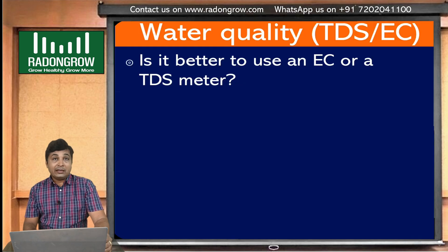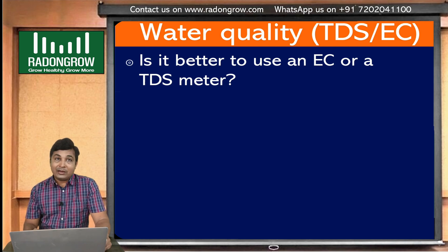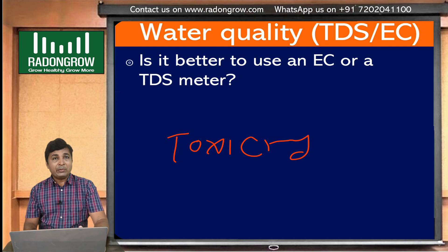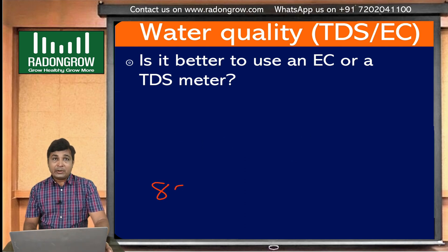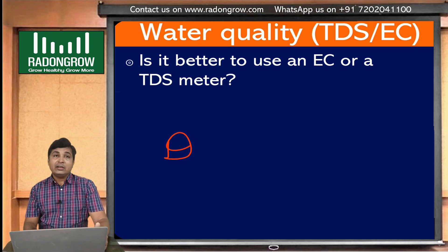Many people think that adding more nutrient will make plants grow faster, but that is not true. If you increase TDS beyond the limit, it will create nutrient toxicity for the plant. For hobby purposes, 800 to 1000 PPM TDS is sufficient for all plants. For commercial purposes, you will have to maintain different TDS or EC values crop by crop. In the next episode, we will provide crop-wise values showing how much TDS and PPM is required for different kinds of plants and varieties.